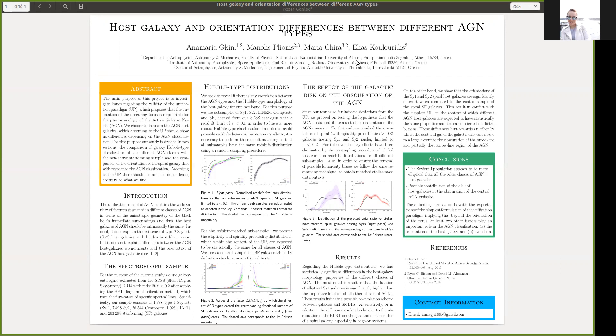Finally, we note that the smaller fraction of Seyfert-2 with respect to the star-forming galaxies at high b over a values strengthens the hypothesis of the host galaxy contribution to the obscuration of the broad line region.